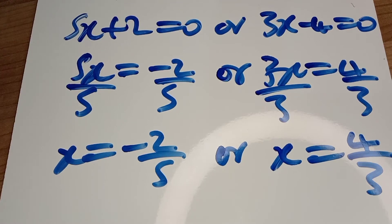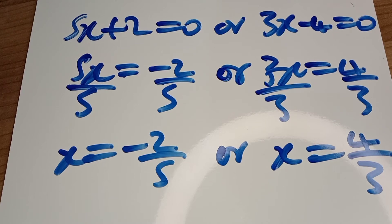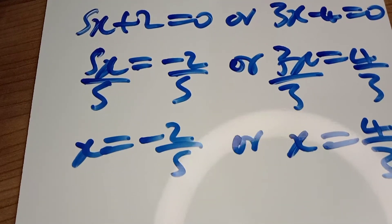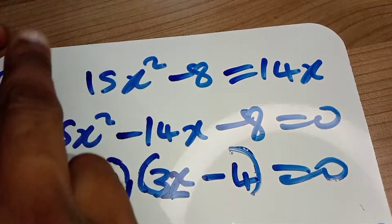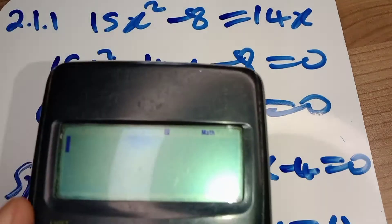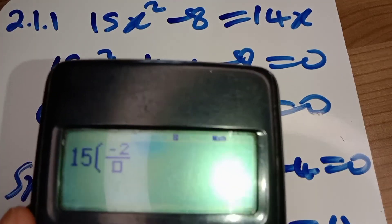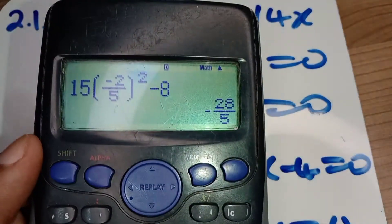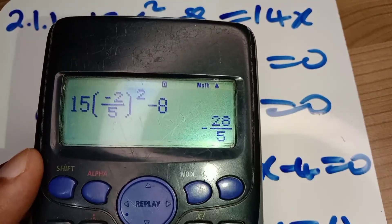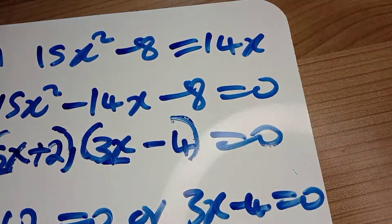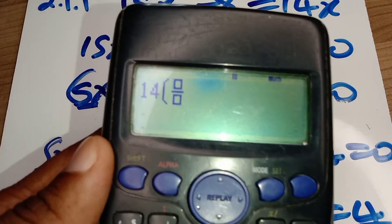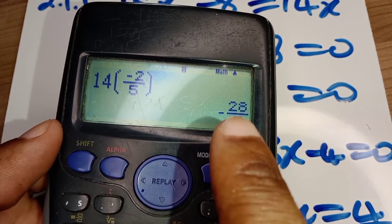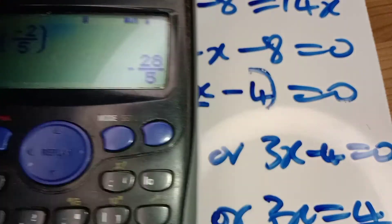With this type of question we should never get it wrong — we plug our answers into the original equation to verify. Setting x = negative two over five, on the left-hand side wherever we see x we substitute negative two over five: 15 times (negative two over five) squared minus 8 gives us negative 28 over five. On the right-hand side we substitute the same value: 14 times (negative two over five), and we get the same value as the left-hand side. Our x values are correct.